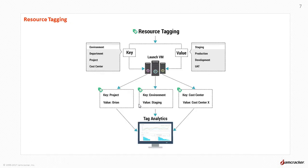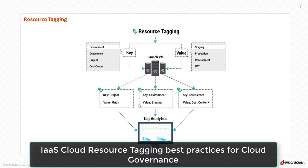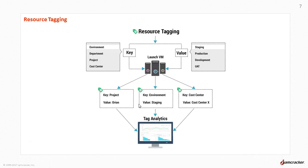Resource tagging provides visibility on the owners responsible for the cloud spend and can be used as the basis of chargeback allocation. Enterprises can manage cloud resources across multiple clouds with suitable tagging taxonomy. Tagging is also useful to execute automated policies to manage IaaS resources. For further details, watch this video: IaaS Cloud Resource Tagging Best Practices for Cloud Governance.